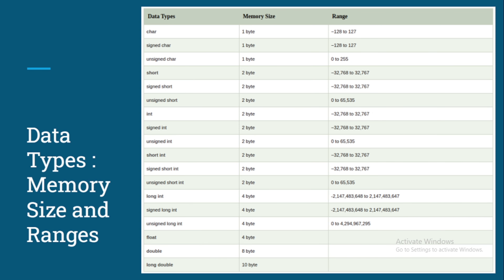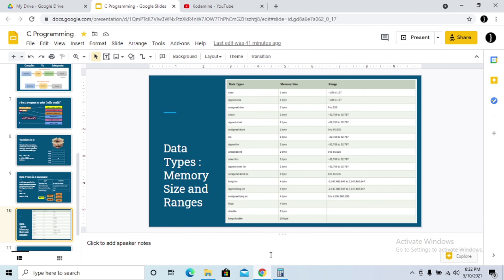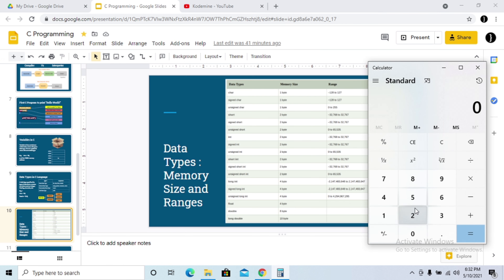If you want to calculate the signed range of char, take 256 and divide by two — the answer is 128. So the signed range is -128 to 127. Now for integer, which has two bytes — that is 16 bits — we calculate two raised to the power 16. Let me open a calculator: 256 times 256.